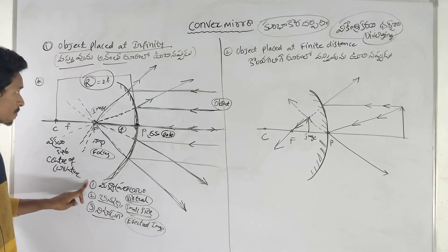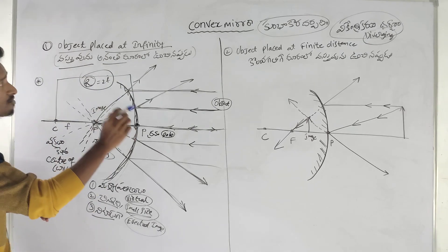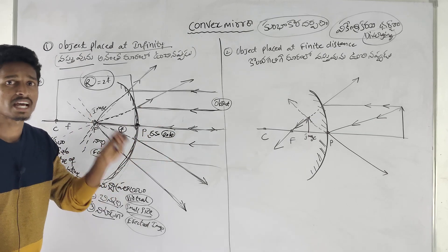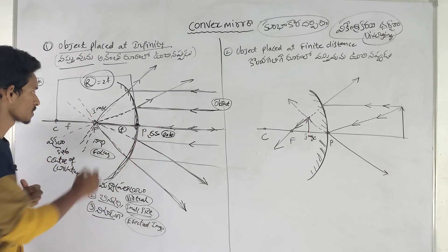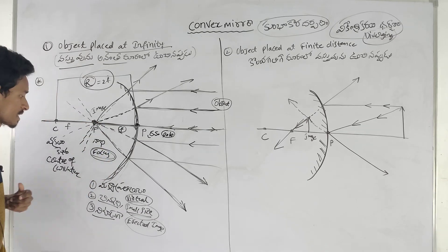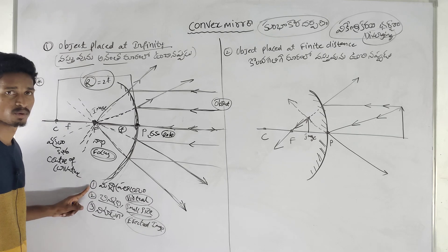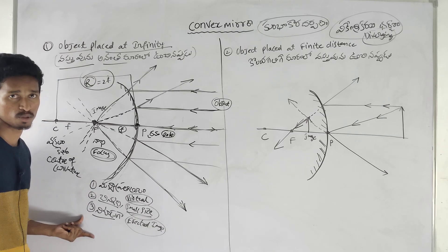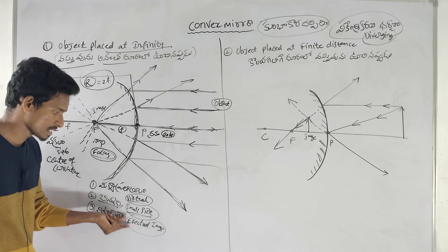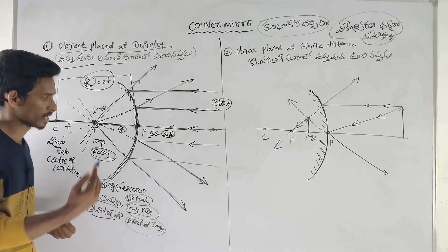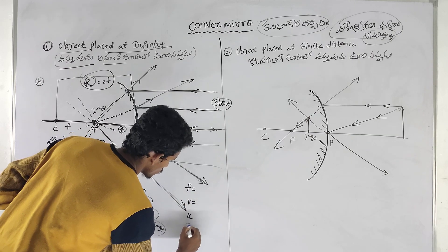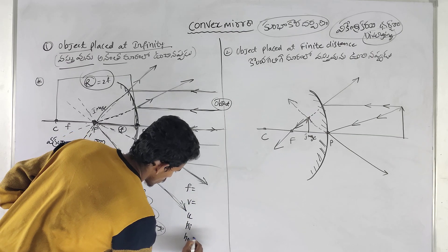This is the first condition: we are working in the convex mirror with the object at infinity. The image is formed at the focus — small size, erected image. In English medium: virtual image, small size, erected image. This is a good point and very important.